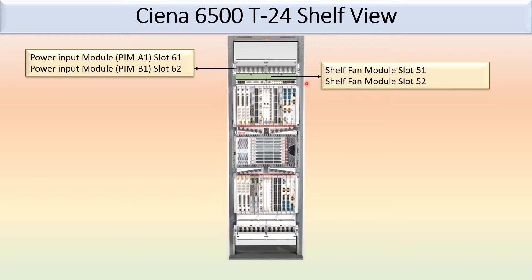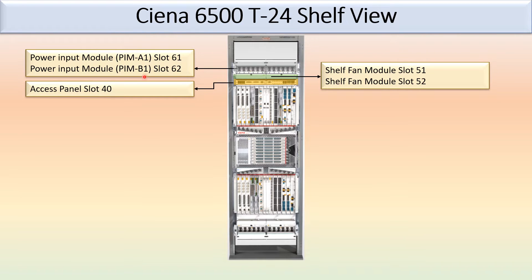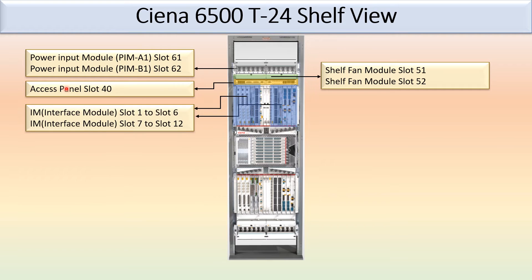This is the shelf-end module slot 51 and slot 52 — these two slots are fixed for the shelf-end module. Slot 40 is used for the access panel. You can also see slot 1 to 6 and slot 7 to 12, which are fixed for the interface module.